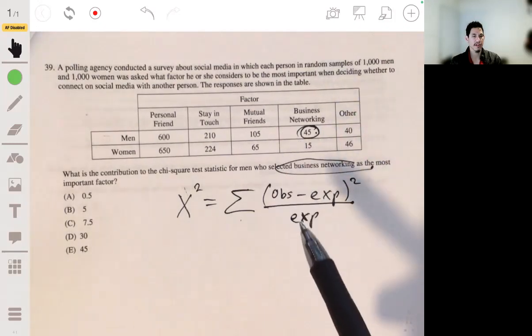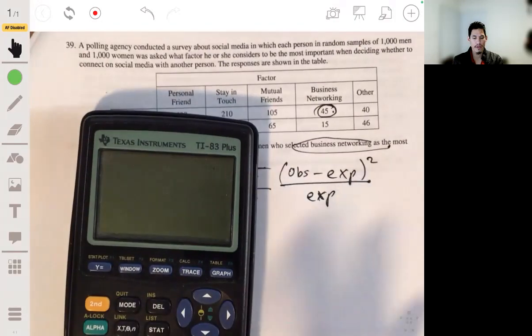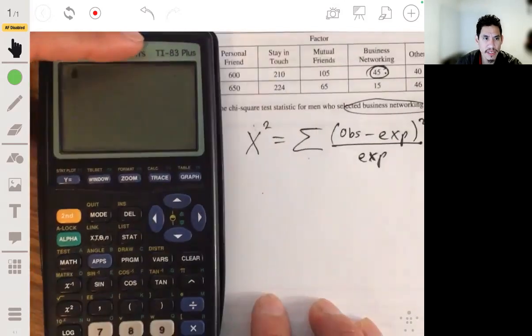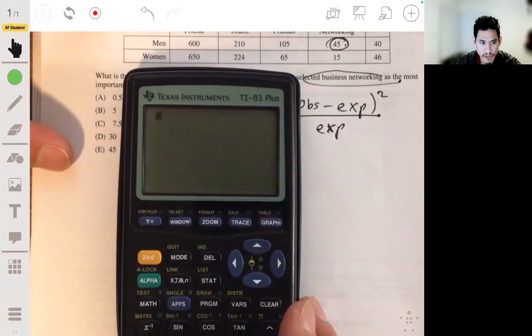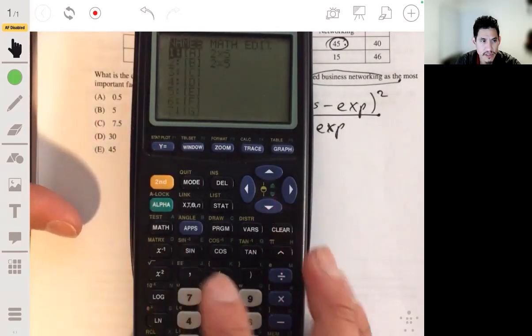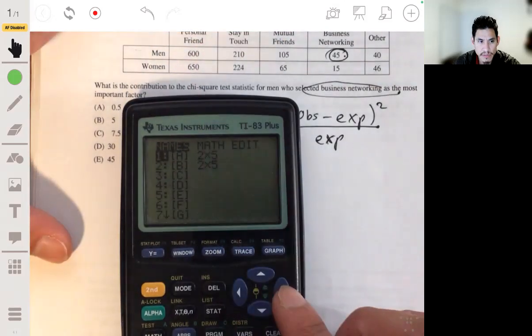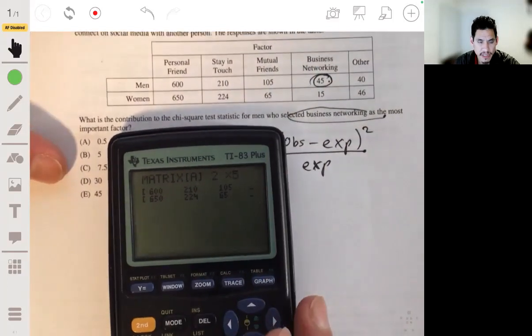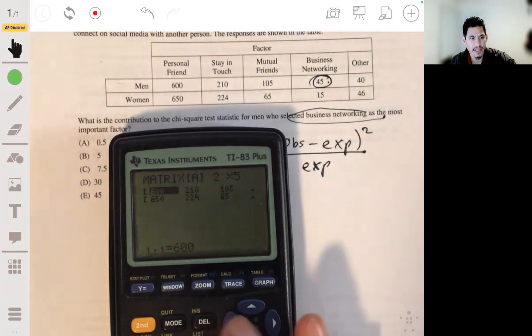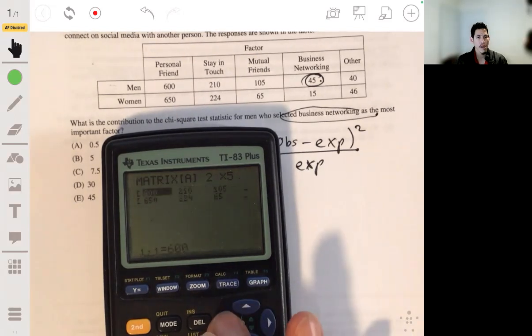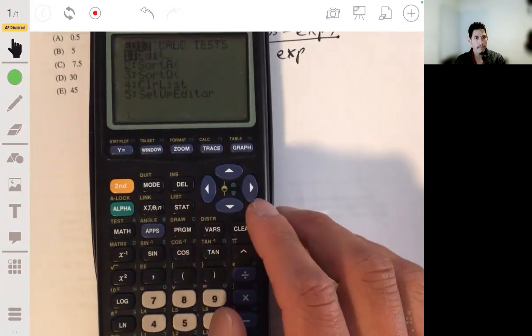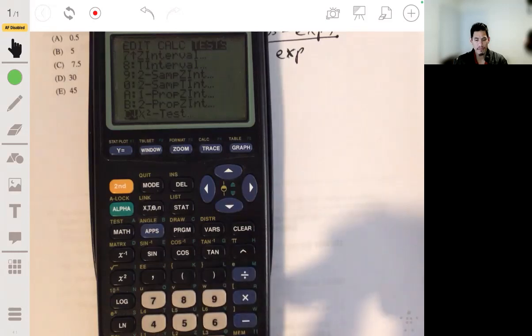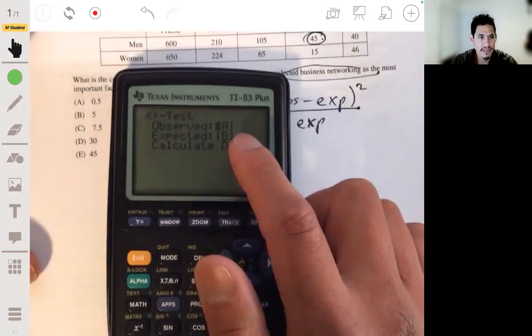So you could brute force this and figure out each one, but luckily in your calculator you have a function where you can run this. And you want to go to the chi-square test, but first you're going to go to a matrix. You're going to enter these values in the matrix. It's a matrix. And this calculator is over here. And you want to make a matrix with two rows and five columns. So I already did this one but it's not there. Just change it to two by five. And just enter these values in the matrix like that.